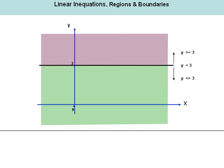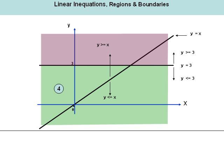Let us extend that argument by superimposing another line on this graph. The equation for this line is y is equal to x. The line y equal to x is also a boundary dividing two regions: the first region, everything below that line, is described by y is less than or equal to x, and everything above is defined by y is greater than or equal to x. Above the line is greater than or equal to, and below the line is less than or equal to.